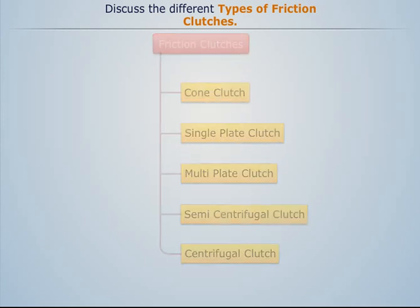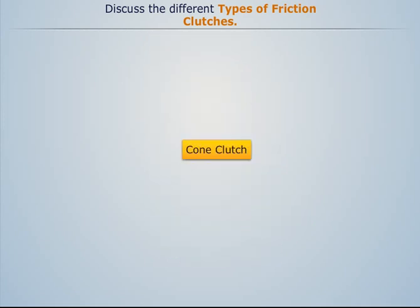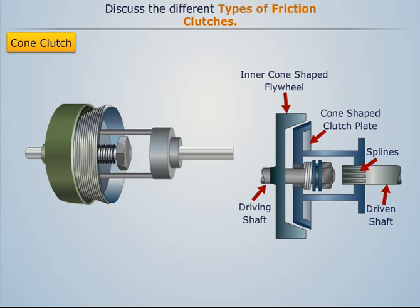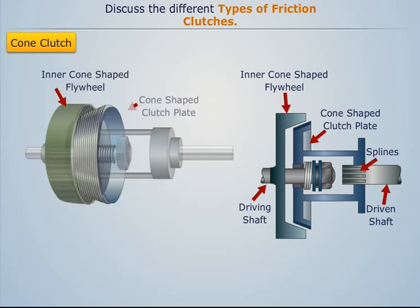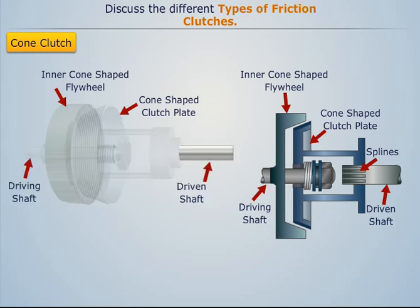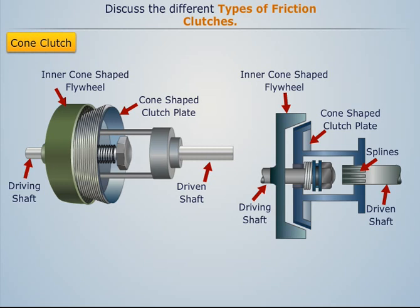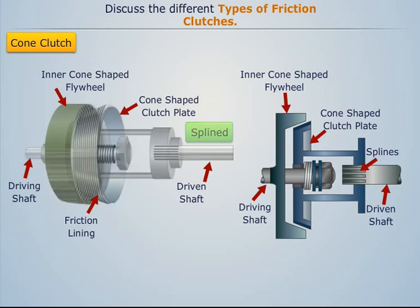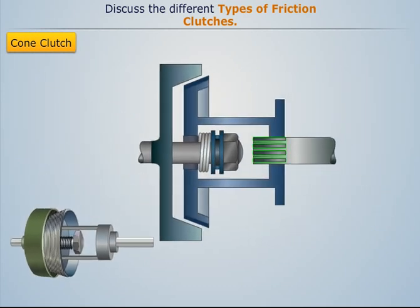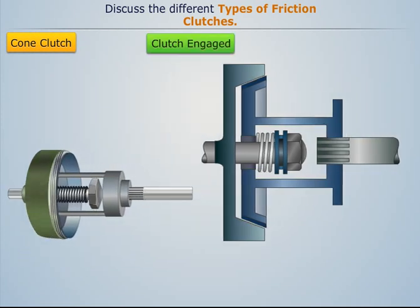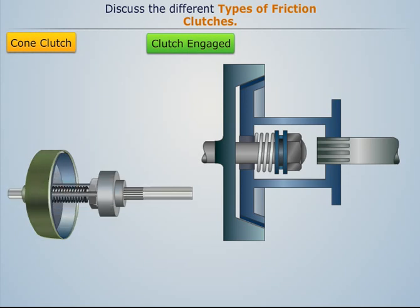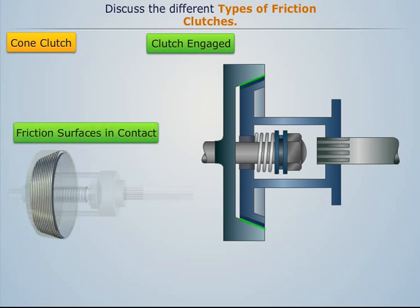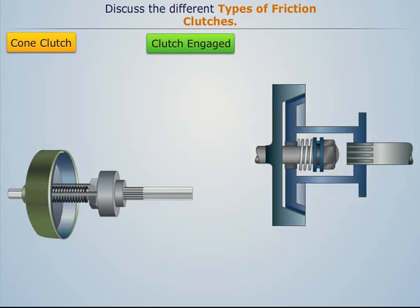Cone clutch: A typical cone clutch assembly consists of an inner cone-shaped flywheel and a cone-shaped clutch plate mounted on the driving and driven shafts respectively. The conical surface of the clutch plate is lined with friction lining. The driven or gearbox shaft is splined, which helps the clutch plate slide forwards and backwards. When the clutch is engaged, the clutch plate cone moves fully inside the flywheel cone so that the conical friction surfaces are in complete contact, thus transmitting torque to the gearbox shaft.